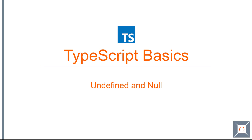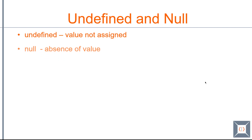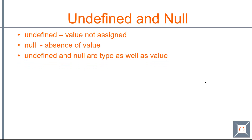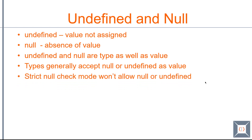Welcome to the TypeScript basics course. In this part, we are going to look at undefined and null. Undefined is used when you haven't assigned any value, whereas null indicates absence of value. Undefined and null are also types, so you can use them as a type as well as a value. Types generally accept null or undefined as a value, except when we are in strict mode where null and undefined are not allowed unless the type explicitly accepts those values. We'll see some examples to make more sense of these.